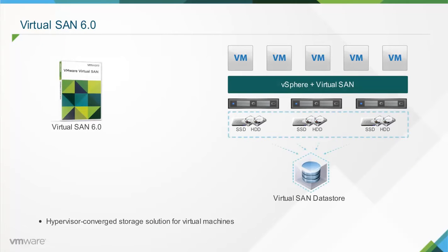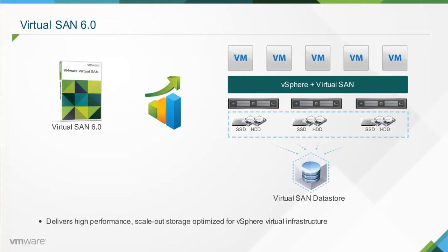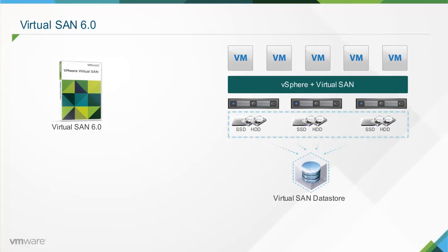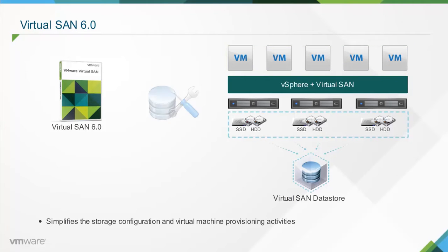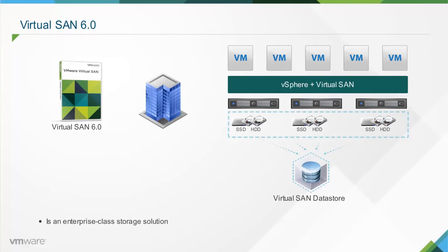Virtual SAN is a hypervisor converged storage solution for virtual machines. It delivers high-performance, scale-out storage that is optimized for vSphere virtual infrastructure. It virtualizes physical storage resources of VMware ESXi hosts and turns them into pools of storage, which can be divided and assigned to virtual machines and applications according to their quality of service requirements. Virtual SAN also simplifies storage configuration and virtual machine provisioning. Virtual SAN 6.0 is an enterprise-class storage solution for any virtualized application, including business-critical workloads, and its seamless integration with vSphere and the entire VMware stack makes it the ideal storage platform for virtual machines.